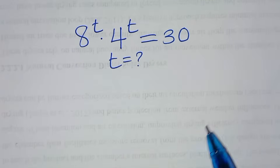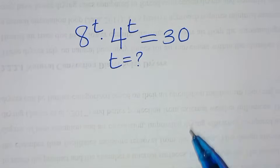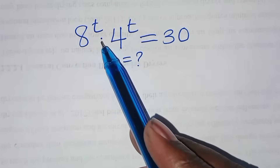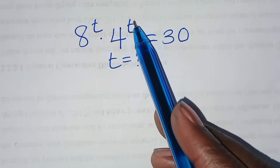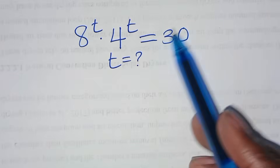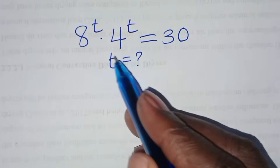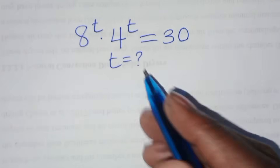You are welcome to solve this nice exponential equation, which is 8 to the power t multiplied by 4 to the power t, equal to 30. What is the value of t?